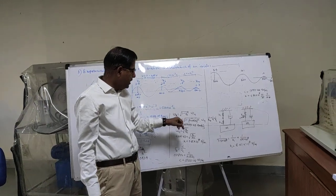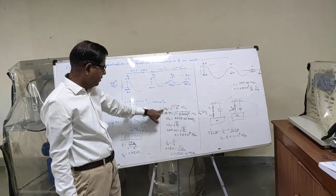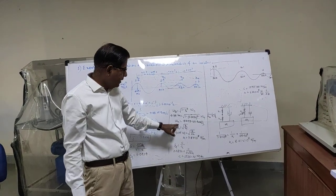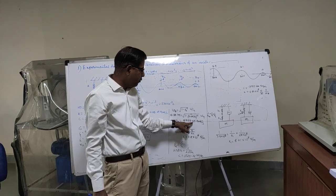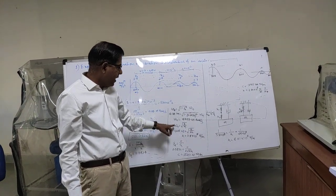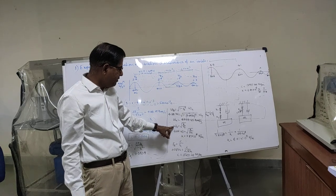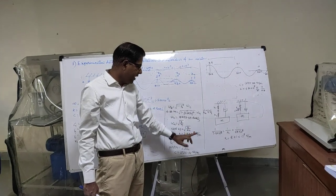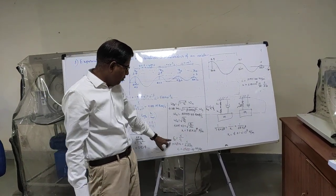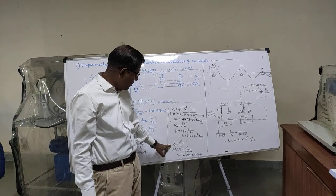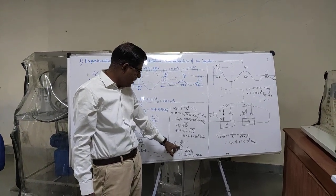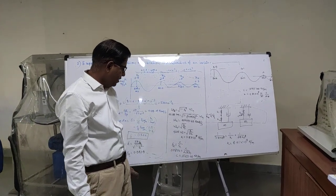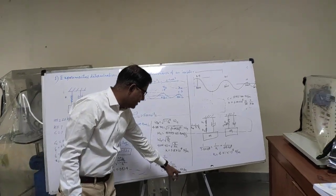Now we know the value of zeta and the value of the damped natural frequency, so we can calculate the natural frequency, which comes out to be 4203.43 radians per second. From this natural frequency we calculate the stiffness k, which comes out to be 3.8 × 10⁸ N/m. To calculate the damping coefficient we use the formula ζ = c/c_c, and the value of c comes out to be 15,051.03 N·s/m.